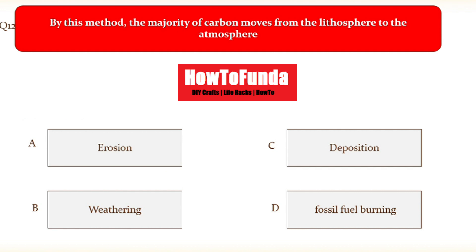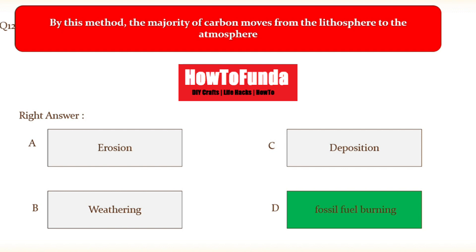Question number twelve: by this method the majority of carbon moves from the lithosphere to the atmosphere. The options are option A erosion, option B weathering, option C deposition, option D fossil fuel burning. The right answer is fossil fuel burning.